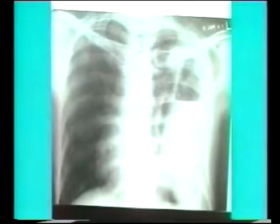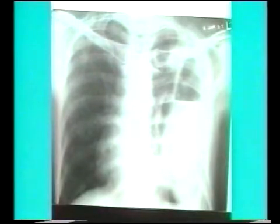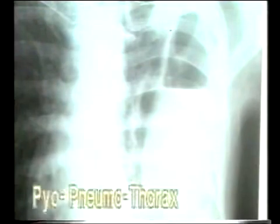In this x-ray, note the loculated fluid collection on the left side with an air fluid level. The fluid appears to be pus as ribs cannot be seen through them, and note the marked thickening of the lung border. So this is loculated pyopneumothorax.